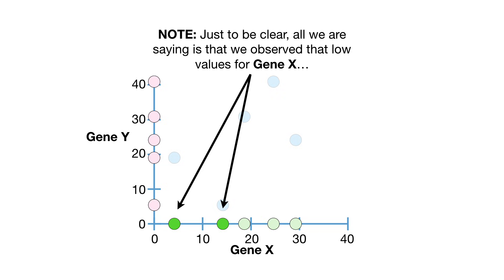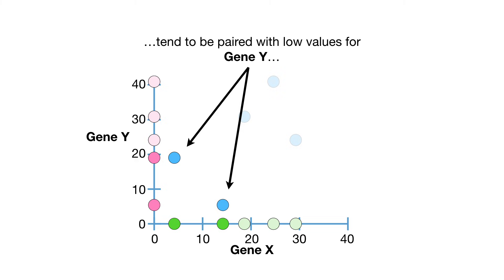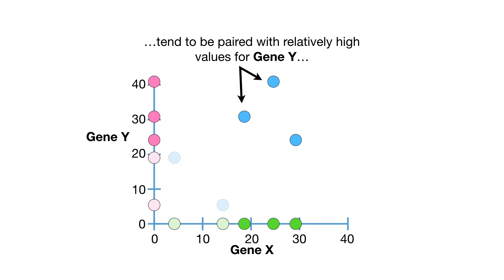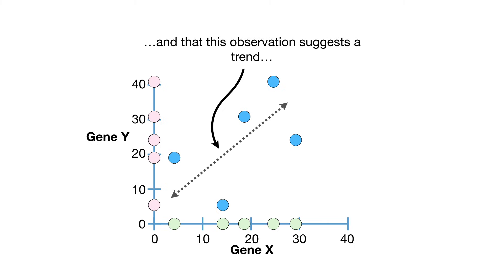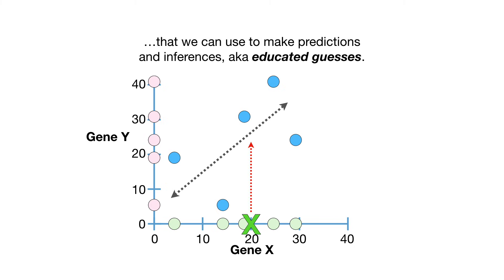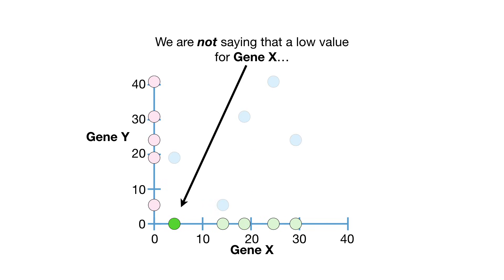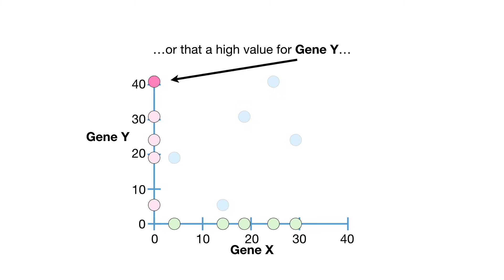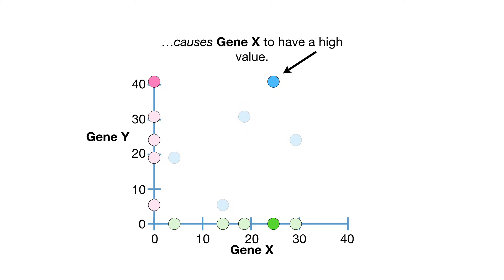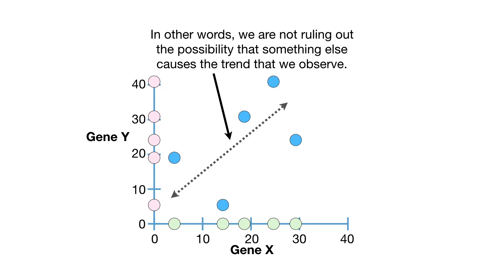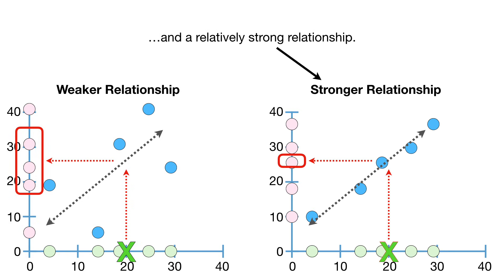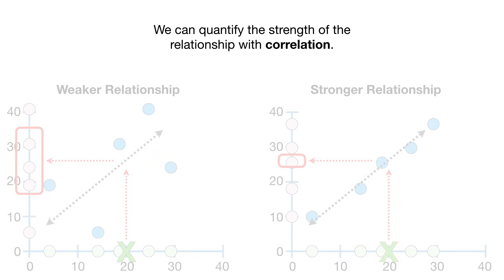Note — all we are saying is that we observed that low values for gene X tend to be paired with low values for gene Y, and high values for gene X tend to be paired with relatively high values for gene Y, and this suggests a trend we can use to make predictions and inferences, i.e., educated guesses. We are not saying that a low value for gene X causes gene Y to have a low value — we are not ruling out the possibility that something else causes the trend we observe. We can quantify the strength of a relationship with correlation.